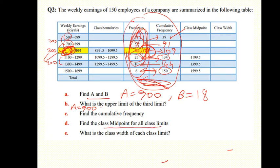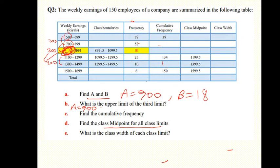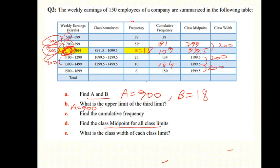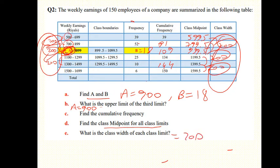Finding the class midpoints: since class width is 200, the midpoints also keep a 200-unit difference. The midpoints are 5995, 7995, 9995, etc. You can verify from either the limits or boundaries that the class width is 200.